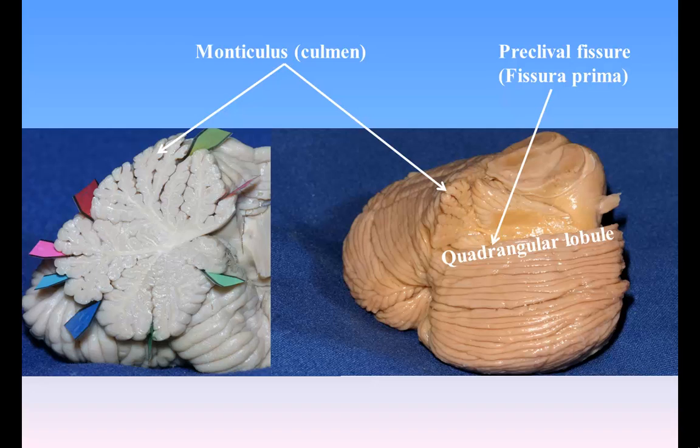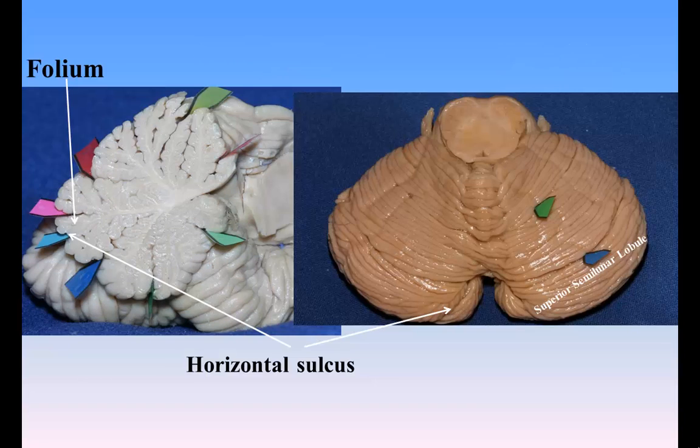The monticulus and quadrangular lobules. The monticulus is the largest part of the superior vermis. Anteriorly, it overlaps the lobulus centralis, from which it is separated by the postcentral fissure. Laterally, it is continuous with the quadrangular lobule in the hemispheres. It is divided by the preclival fissure into an anterior raised part, the culmen or summit, and a posterior sloped part, the clivus. The quadrangular lobule is similarly divided. The culmen and the anterior parts of the quadrangular lobules form the lobus culminis; the clivus and the posterior parts, the lobus clivi.